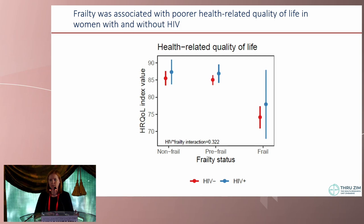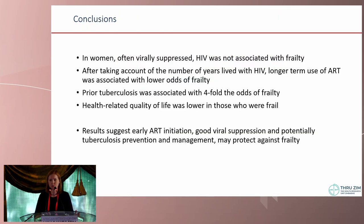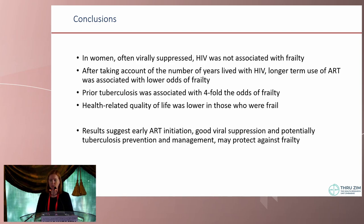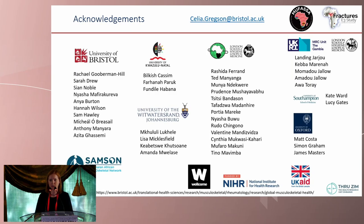Frailty was associated with poorer health-related quality of life, and this was the case in women both with and without HIV. To conclude: in women who were often virally suppressed, HIV was not associated with frailty. After accounting for years lived with HIV, longer-term ART use was associated with lower odds of frailty. Prior tuberculosis was associated with a fourfold increased odds of frailty, and health-related quality of life was lower in frail women. Together, these results suggest that early ART initiation, good viral suppression, and tuberculosis prevention and management may protect against frailty in women in Zimbabwe.